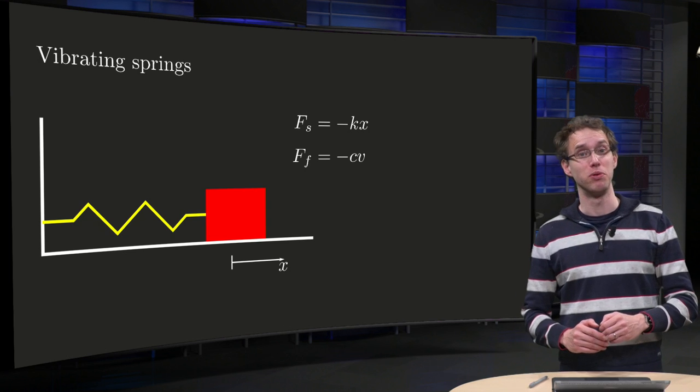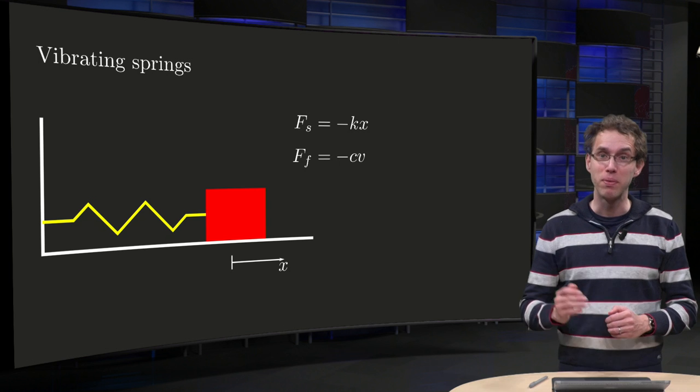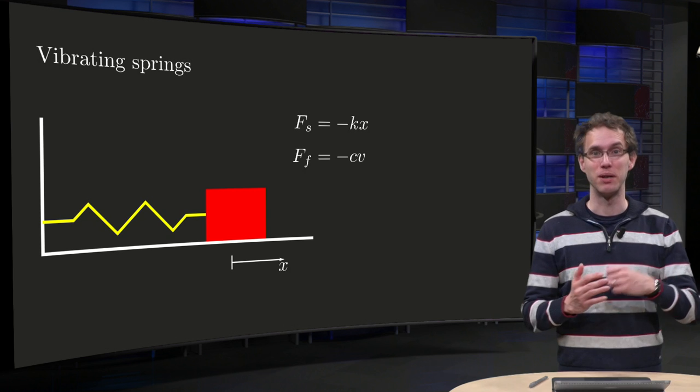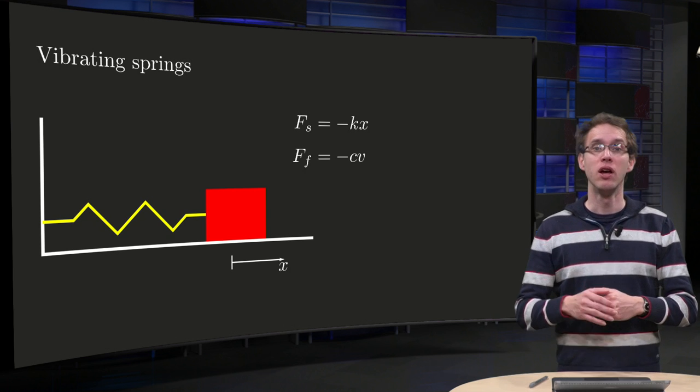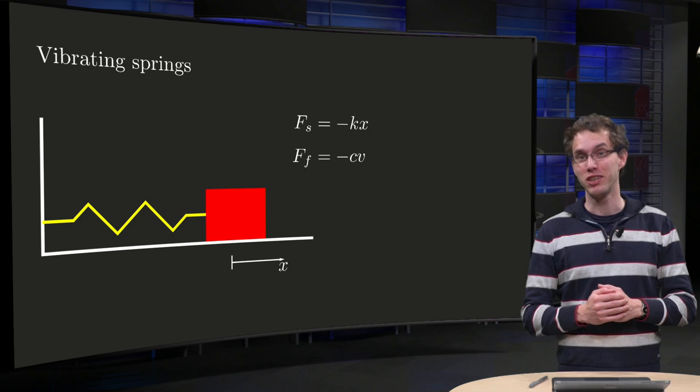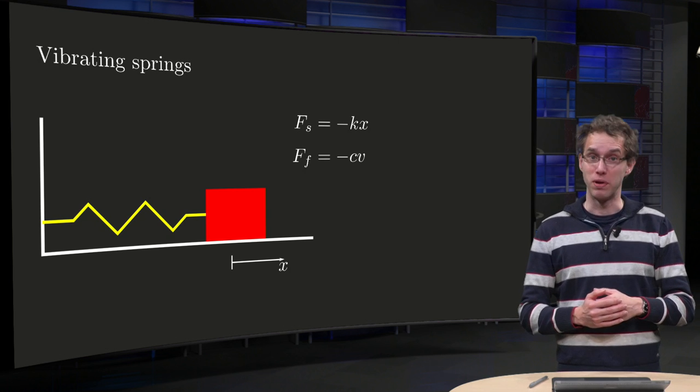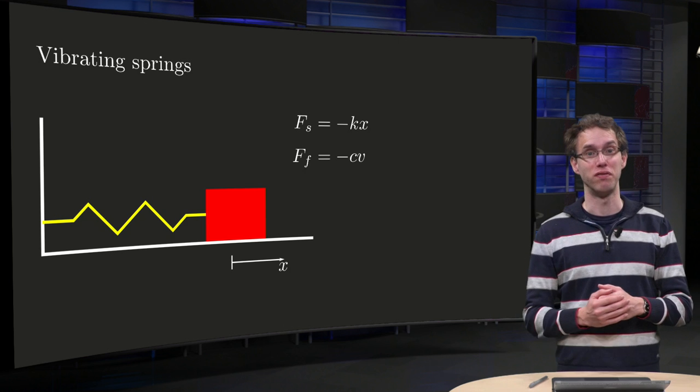In many different textbooks on calculus, a vibrating spring is treated as an example. So why is this example always taken? Well, from an applicational point of view, this is an interesting example. Many structures can be modeled as springs or as combinations of vibrating springs.